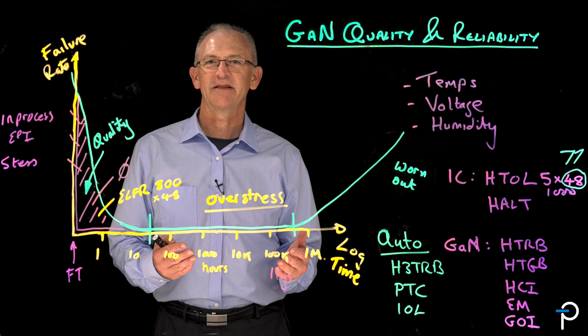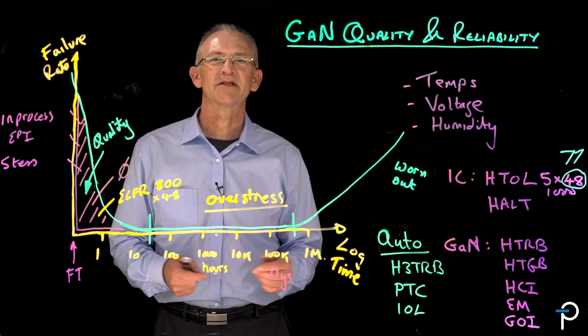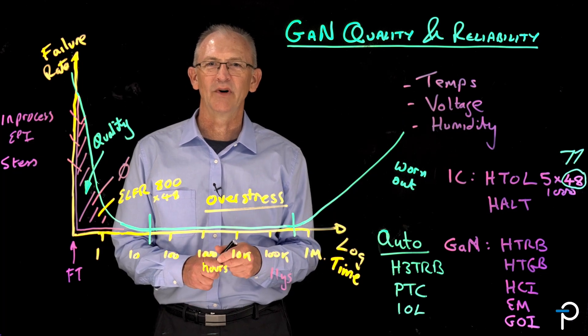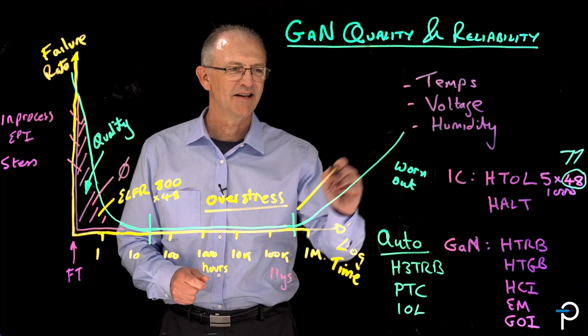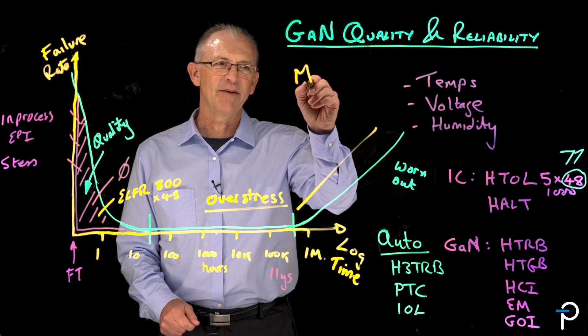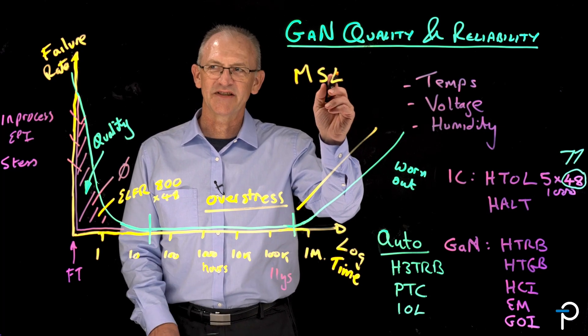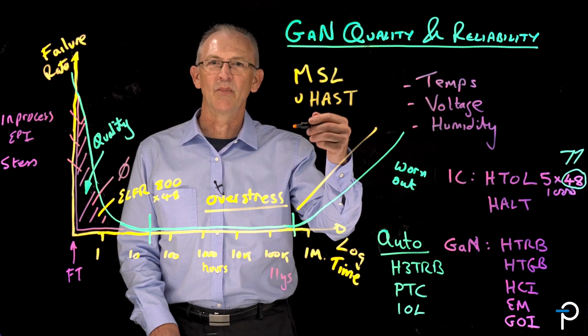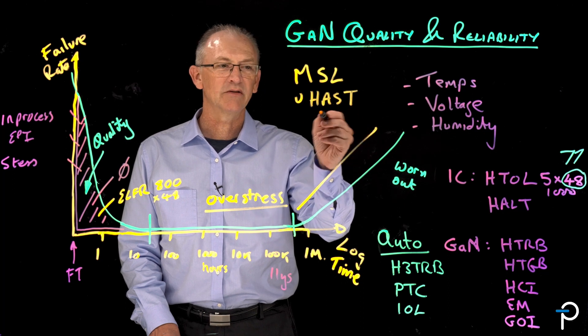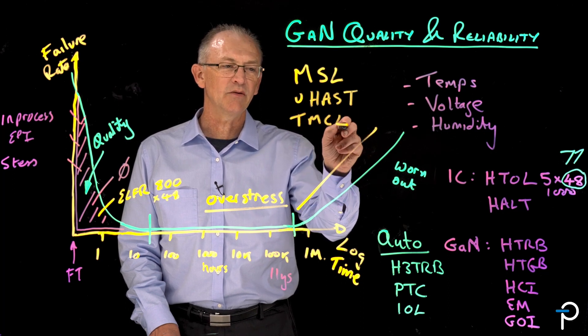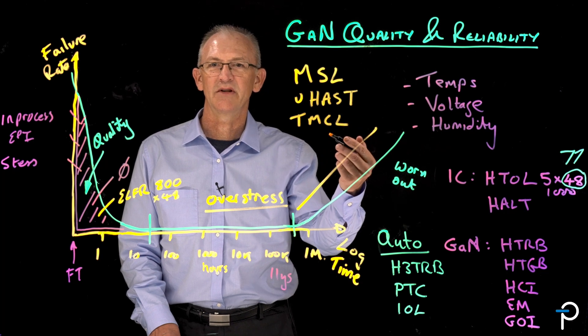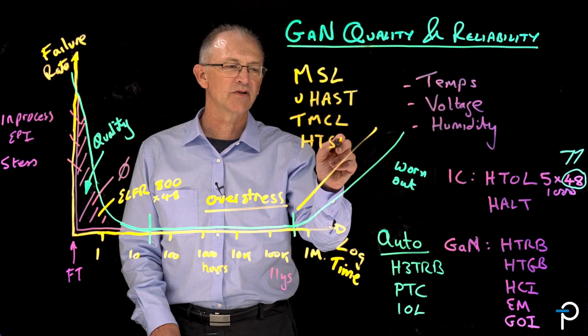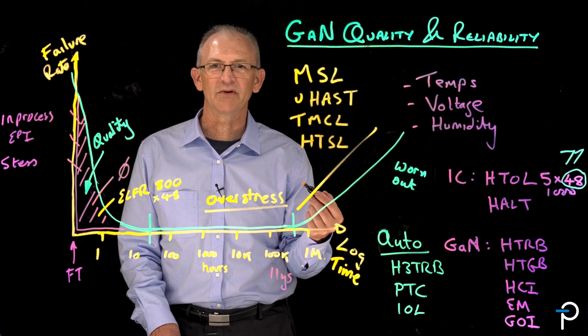So how do we assure that our devices are robust under temperature, voltage and humidity that they're going to find out there in the wild? Well, we run more tests. These tests are MSL, moisture sensitivity level, UHAST, which is also a moisture test under pressure, TMCL, which is a temperature cycling test, which tests for differential heating and cooling, and high temperature storage life, which is the absolute high temperature test.